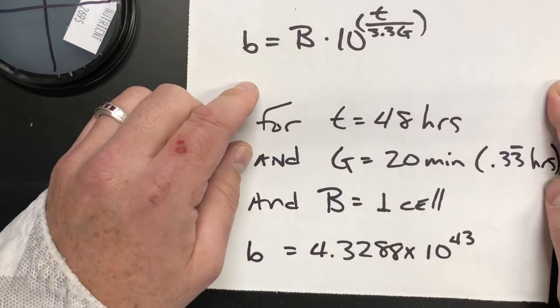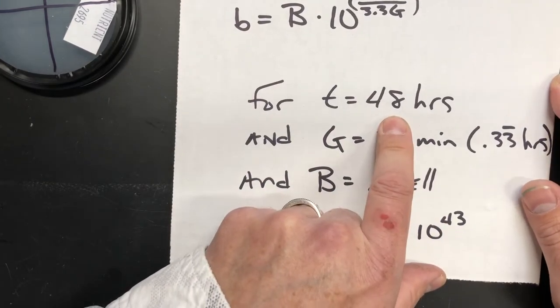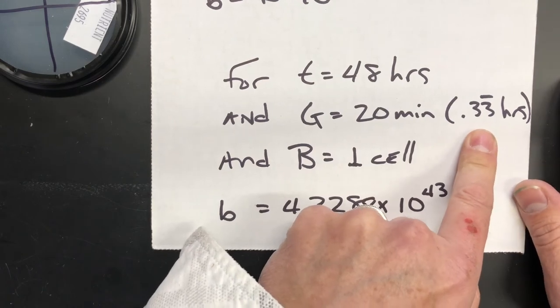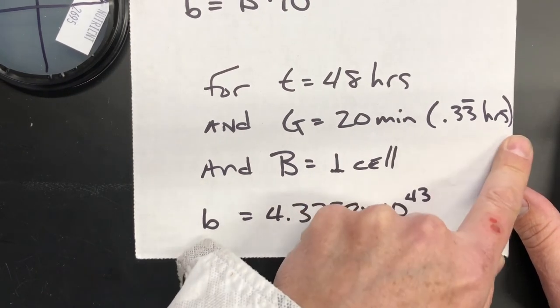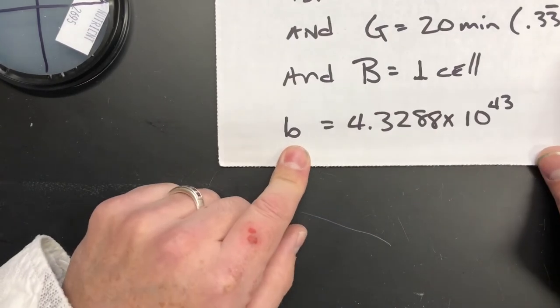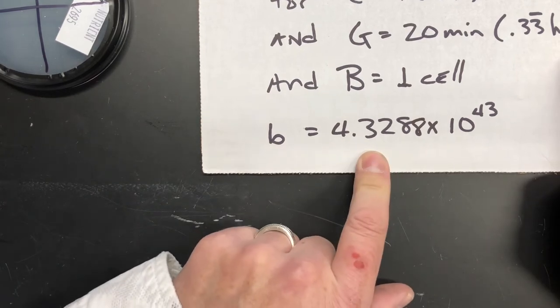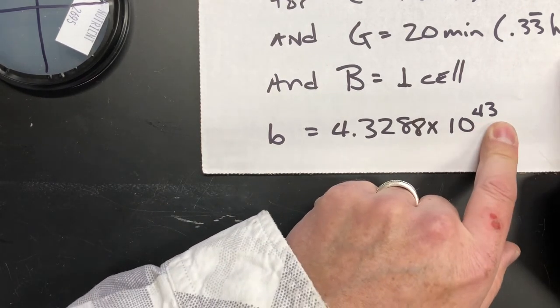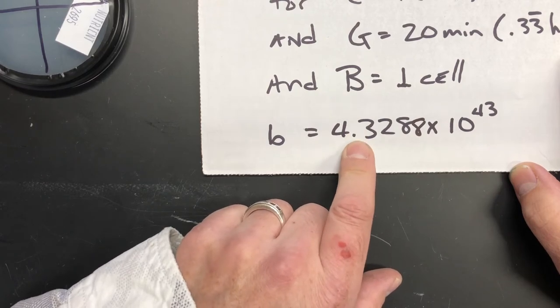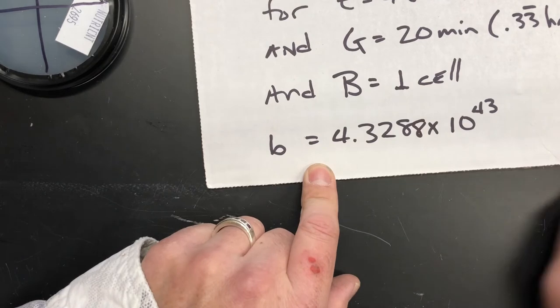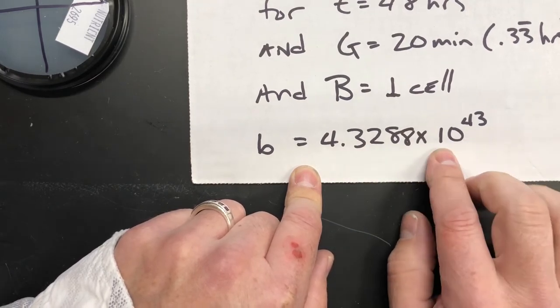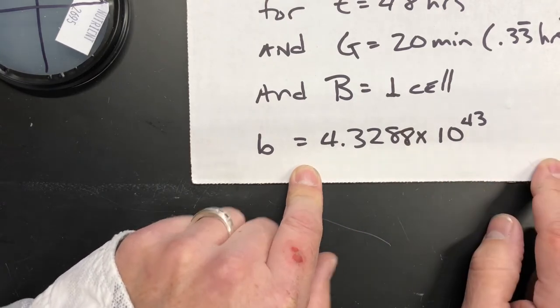So if we decide to wait two days, 48 hours, T equals 48 hours, and we know that we have E. coli with a 20-minute generation time, or one-third of an hour, 0.33 depending on how long you let that trail out will determine your final outcome. Let's say we have one cell. Our population at 48 hours is 4.3288 times 10 to the 43rd power. That means if we want to get rid of the 10 to the 43, we need to move this decimal 43 spaces to the right. So that's 39 more zeros after this number to get rid of that decimal.